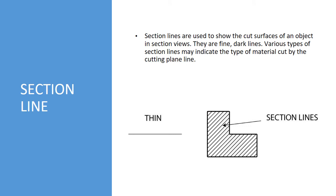We have section lines. A section line is used to show a cut surface of an object in section views. If we had a block and we wanted to show something on the inside of that block, we would take a slice through it and then we would be looking at it from the inside. These are fine, dark lines.